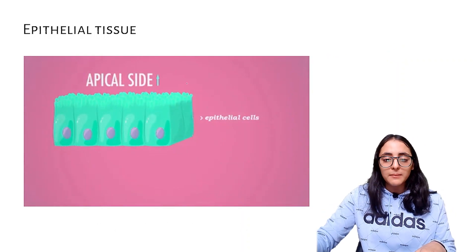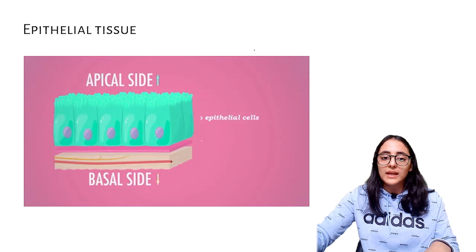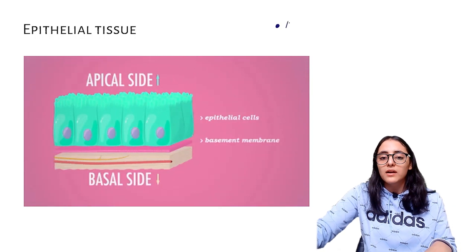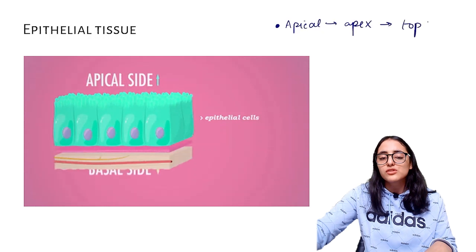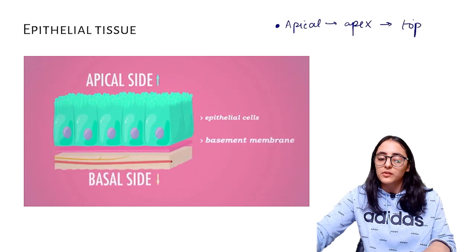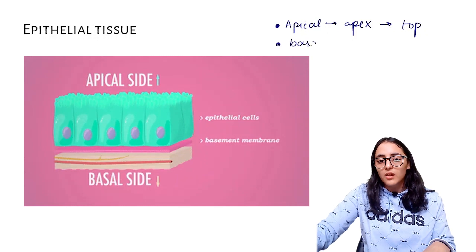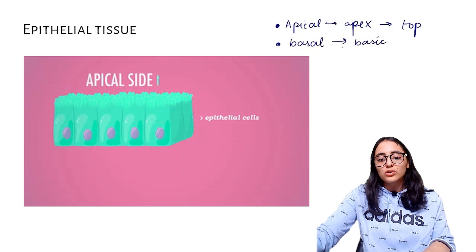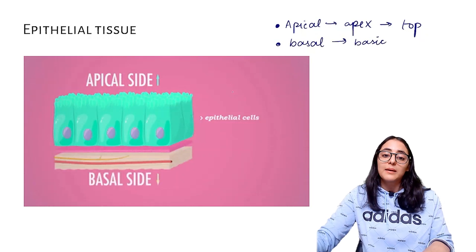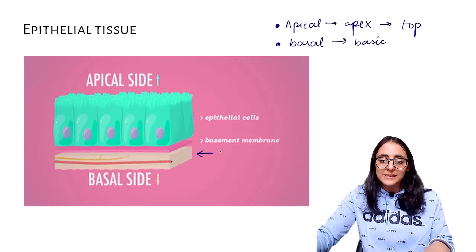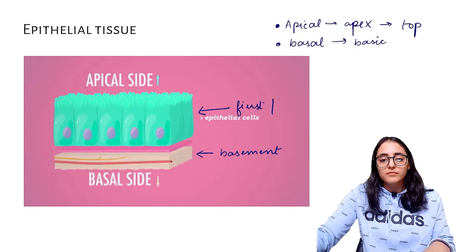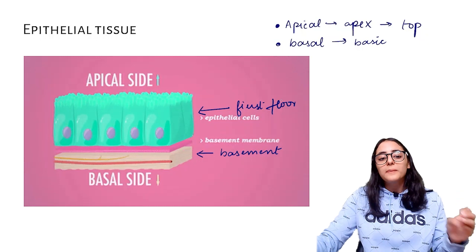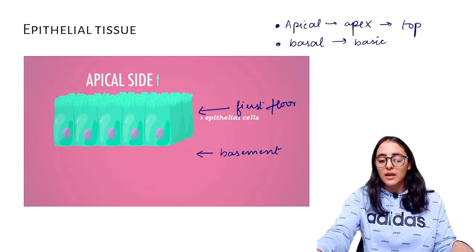The permeability of epithelial tissue is how exchange happens — our skin is the outer covering and the external environment exchanges through it via the permeability property of epithelial tissue. Internal organs also require this permeability for material exchange. Epithelial tissue has two sides: the apical side, which comes from the word apex meaning 'at the top,' and the basal side meaning the basement or base layer.